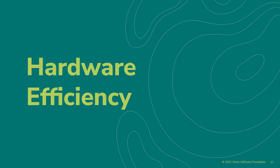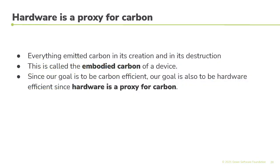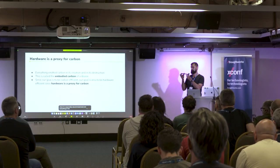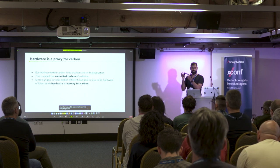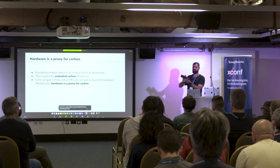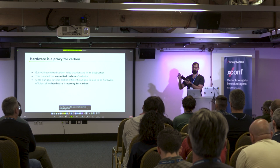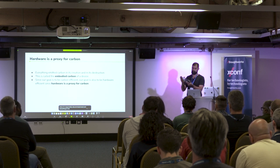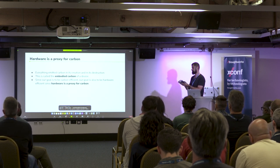Hardware efficiency: everything emits carbon when it's built and will emit carbon when it's responsibly decommissioned. This is called embodied carbon, sometimes called embedded carbon. So if our goal is to be carbon efficient, our goal is also to be hardware efficient.